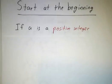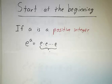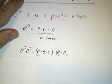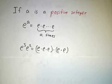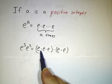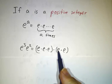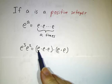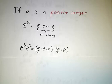So if you have a positive integer, then you know what e to the a means. e to the a means you multiply e by itself a bunch of times. And so for example, if you had e cubed times e squared, well e cubed is e times e times e, and e squared is e times e. And if you multiply them together, now you've got 1, 2, 3, 4, 5 factors of e.